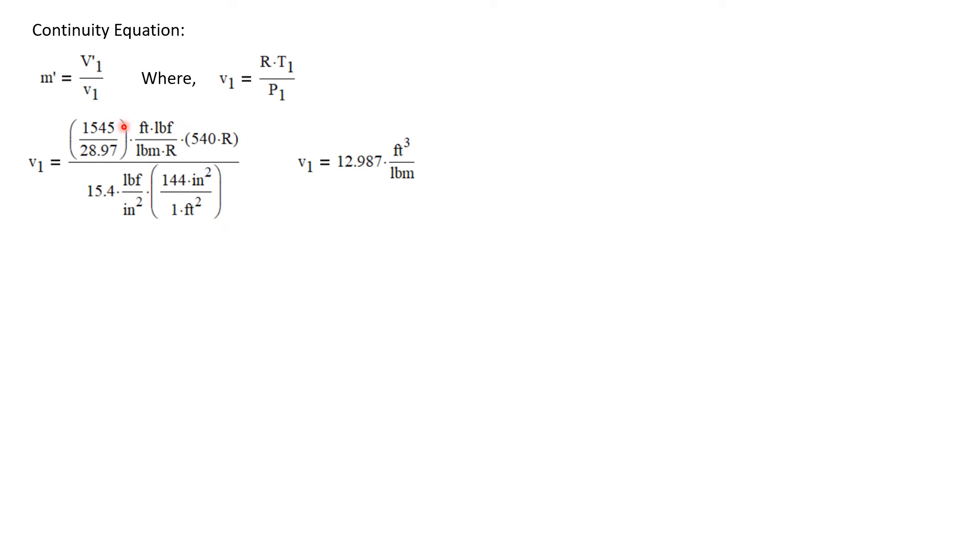The universal gas constant is 1545. We'll divide that by the molecular weight, which is 28.97 for air. That quotient will be in units of foot-pounds force per pound mass R. We'll multiply by the temperature in degrees R and divide by the pressure in pounds force per square inch. But I'm going to convert that to square feet to keep my units consistent. And I get now a specific volume at the inlet of 12.987 cubic feet per pound mass.